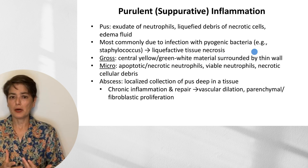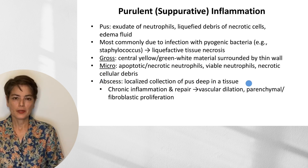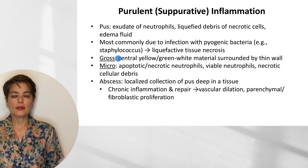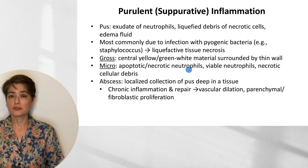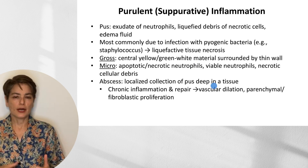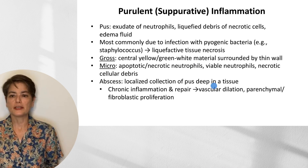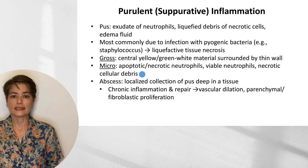One thing we can see with pus is an abscess — a localized collection of pus deep in a tissue. Grossly, the central area will have yellow-green-white necrotic material, which is pus. The green-white color comes from the heme moiety seen in myeloperoxidase, the enzyme used by neutrophils to generate reactive oxygen species. Microscopically, we'll see apoptotic and necrotic neutrophils admixed with viable neutrophils and necrotic cellular debris.